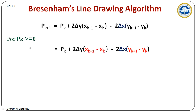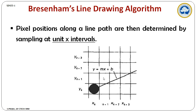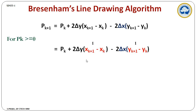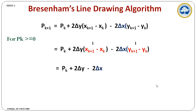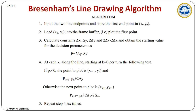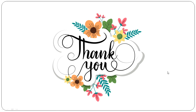When pk is greater than or equal to 0, we increment both x and y coordinates by 1. The difference between these pixels is 1, so the next decision parameter becomes pk plus 2(delta y) minus 2(delta x). This is the complete derivation of Bresenham's line drawing algorithm. After deriving these terms, you should write the algorithm at the end of your answer. I hope you understand the derivation of Bresenham's line drawing algorithm. Thank you.